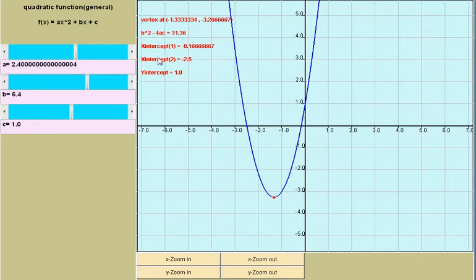You have also the x intercepts, two of them in this case since the discriminant b² minus 4ac is positive and you also have the y intercept.